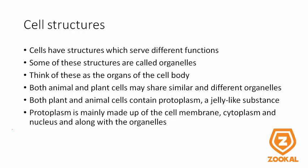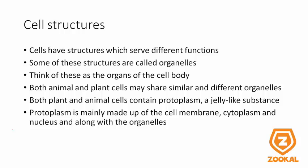Both animal and plant cells have similar and different organelles, and both cells contain protoplasm, which is a jelly-like substance making up the core of the cell. Protoplasm is mainly made out of the cell membrane, cytoplasm, and nucleus, along with organelles.